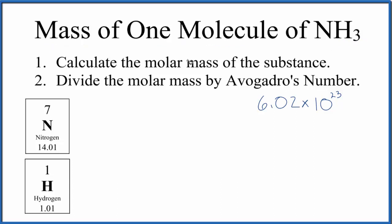To do that, all we really have to do is find the molar mass for ammonia and then divide that molar mass by Avogadro's number. So let's do that. Let's first find the molar mass.